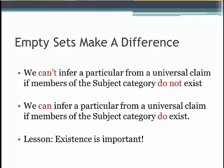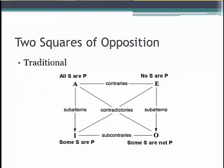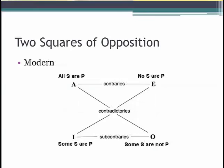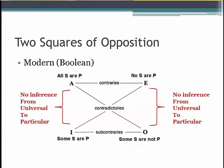So there can't be at least one leprechaun wearing a green hat if there are no leprechauns. This means there are two versions of the logical square: the traditional square, or Aristotelian square, in which we assume the sets are not empty; and the modern or Boolean square, in which it is possible that the categories are empty sets. The modern square of opposition is also called the Boolean square, after the logician Boole, who made great contributions to modern logic.